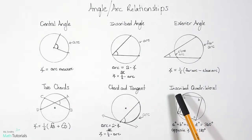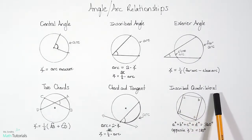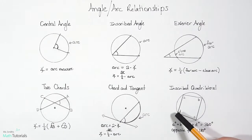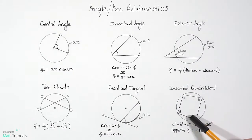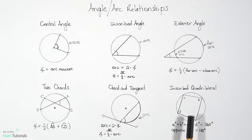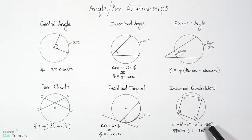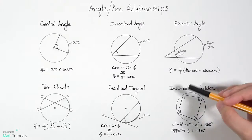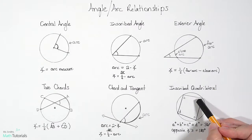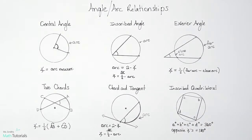The last relationship on this page is inscribed quadrilaterals. We have a quadrilateral inside a circle, but that doesn't change our basic principle: the measure of angles A, B, C, and D all add up to 360 degrees, since angles within a quadrilateral always add up to 360 degrees. An extension of that is that opposite angles — A and C, or B and D — add up to 180 degrees.